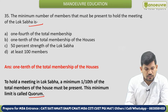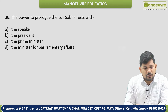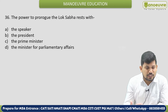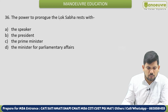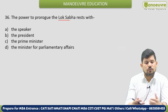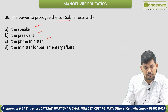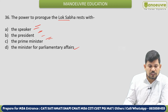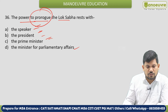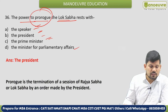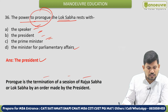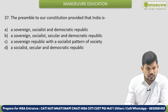Next: The power to prorogue the Lok Sabha rests with whom? Prorogue means to terminate — so who has the power to terminate the Lok Sabha session? Options: Speaker, President, Prime Minister, or the Minister for Parliamentary Affairs. The correct answer is the President. Prorogation means the termination of a session of the Lok Sabha or Rajya Sabha by an order made by the President.